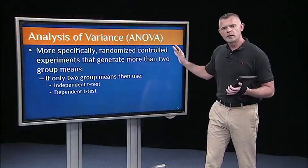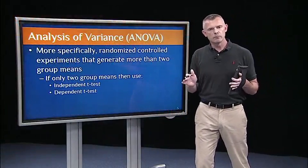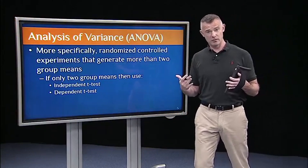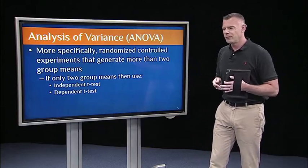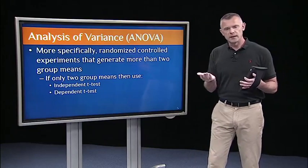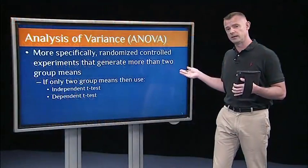If we're conducting experimental research and more than two group means are generated and we want to compare those group means, then we'll engage in ANOVA. If we only generate two group means, then we can just do a t-test. If there are two independent samples, then that's an independent t-test. And if there are two means from the same people, then we'll do the paired samples t-test, or the dependent t-test.